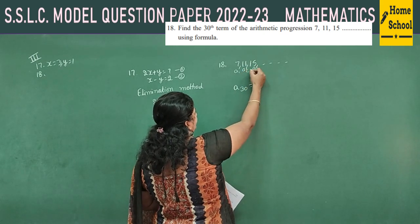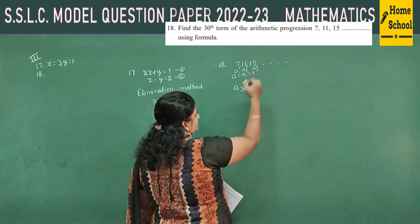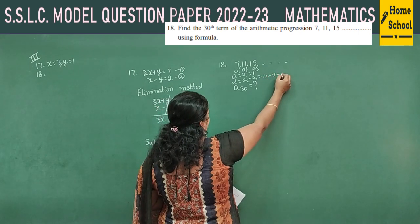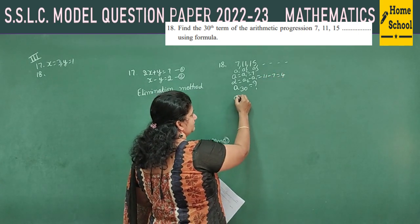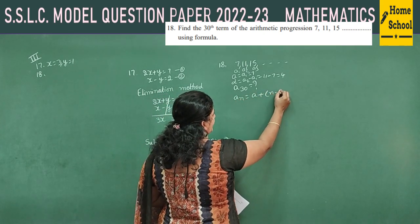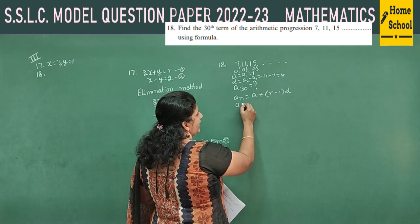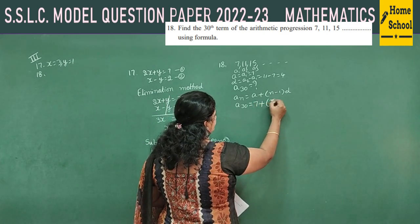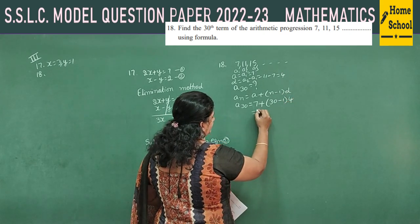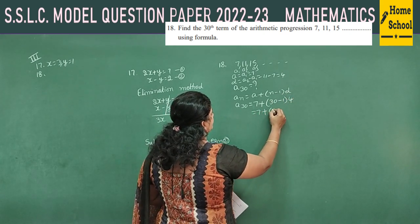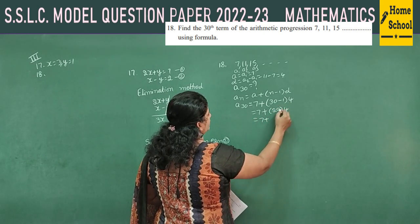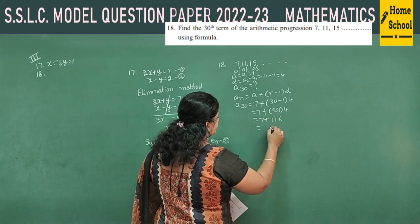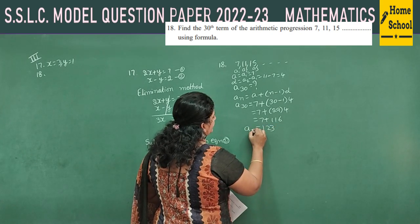First term a₁ = 7. Common difference d = a₂ − a₁ = 11 − 7 = 4. Using the formula aₙ = a + (n−1)d, substitute n = 30: a₃₀ = 7 + (30−1) × 4 = 7 + 29 × 4 = 7 + 116 = 123. The 30th term of the given arithmetic progression is 123.